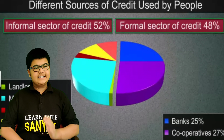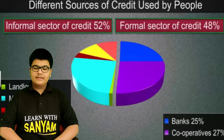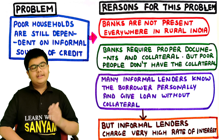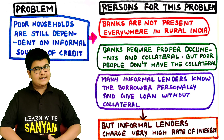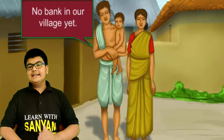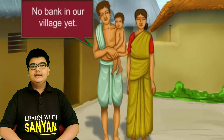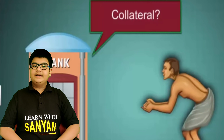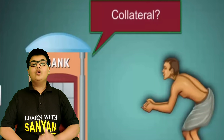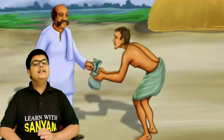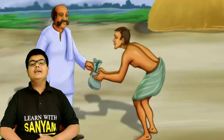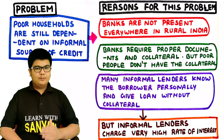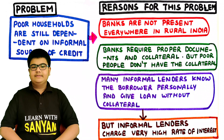Poor households are still dependent on informal sources of credit. If formal sector institutions like banks and cooperatives provide cheaper loans, why don't poor people go to them? There are several reasons. First, banks are not present everywhere in rural areas. Second, banks require proper documentation and collateral, but poor people often don't have collateral. Third, many informal lenders know the borrower personally and give loans without collateral. Thus, lack of collateral and documentation is a key reason why poor people prefer informal lenders over the formal sector.